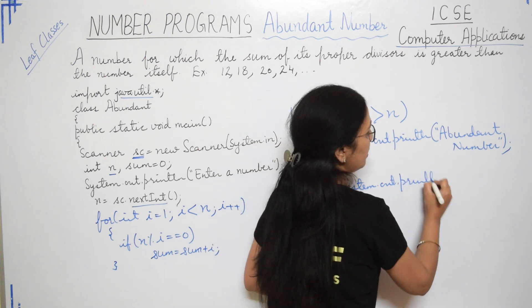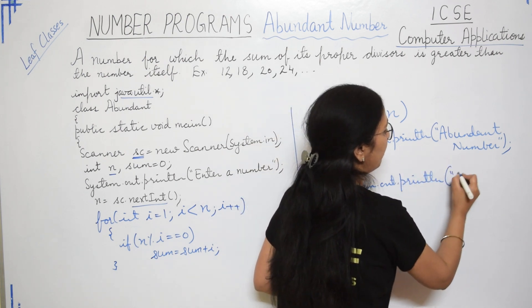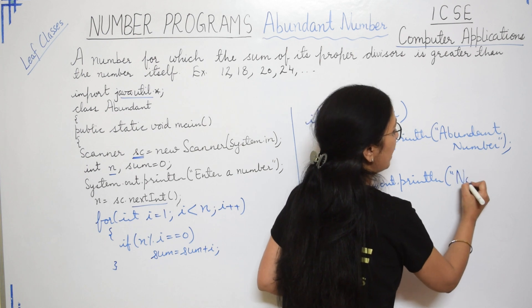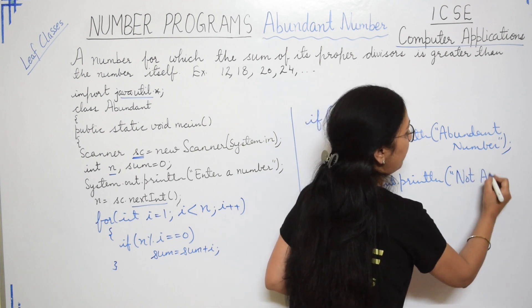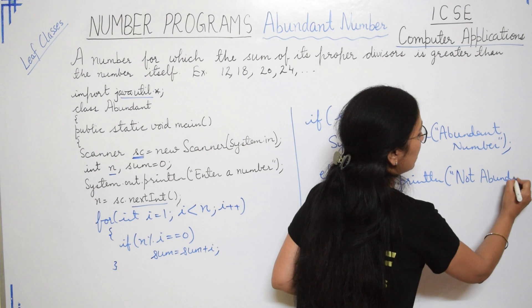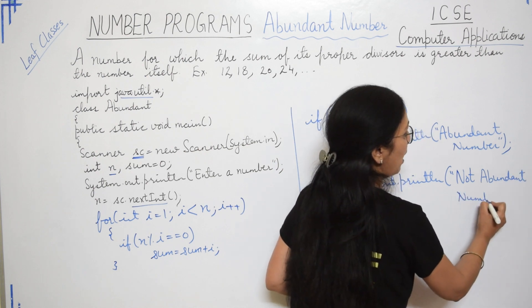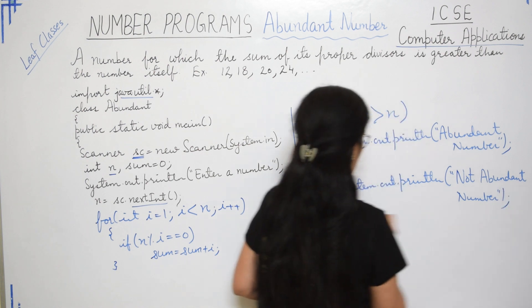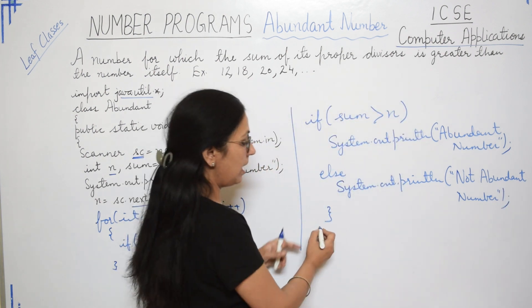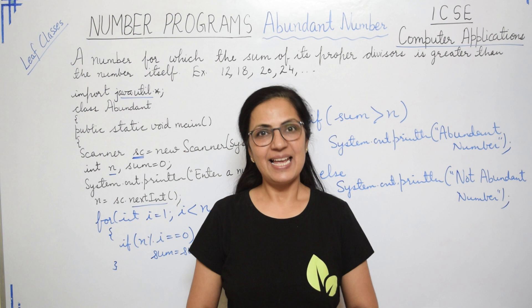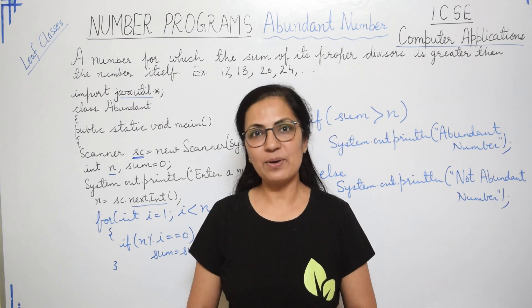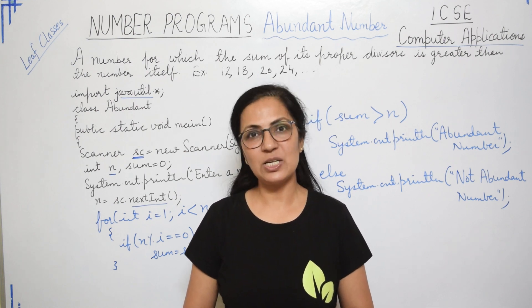So children this is very simple program. And you must practice all the number programs which are there in the playlist. Close main, and then you close class. I hope the logic and the program for the abundant number is clear to all of you.